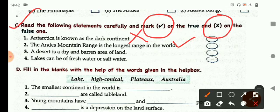A desert is a dry and barren area of land. This is also a right one, so here also you will put a tick mark. Now last one children, you will do this on your own.